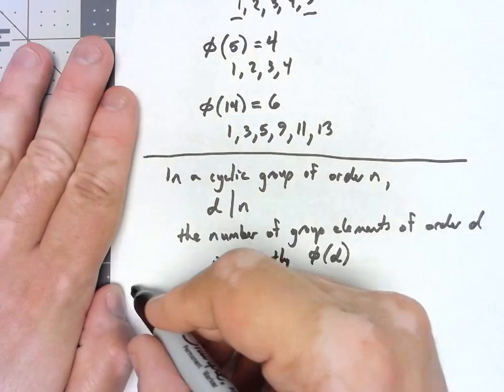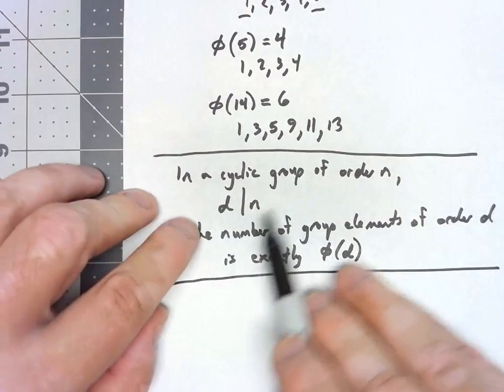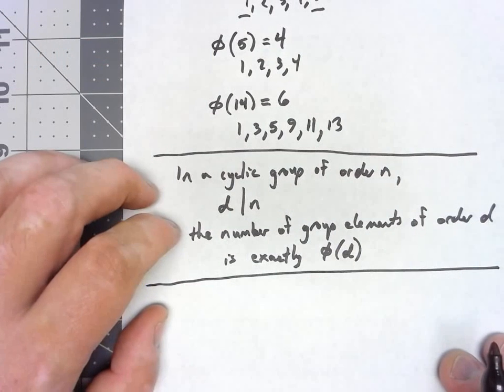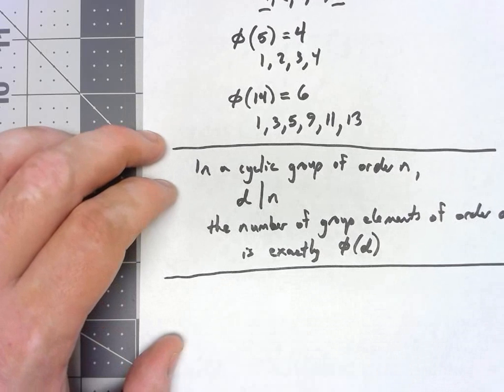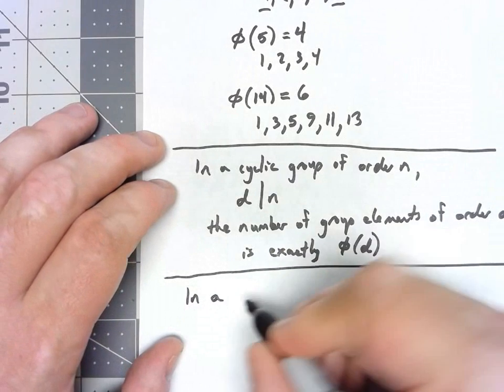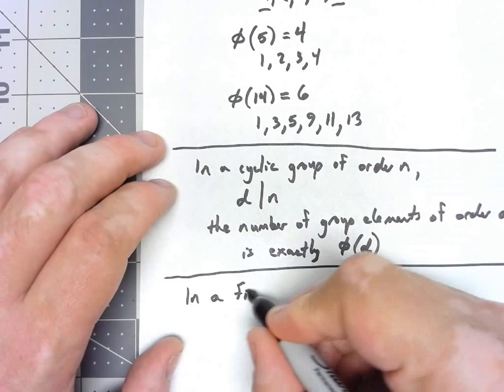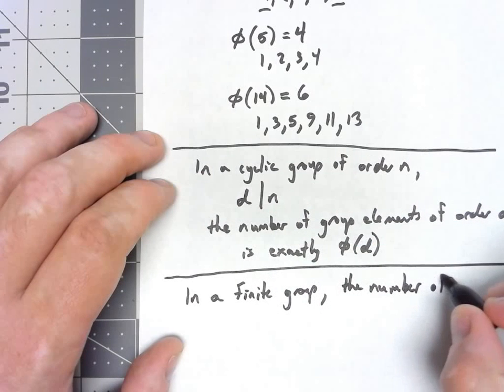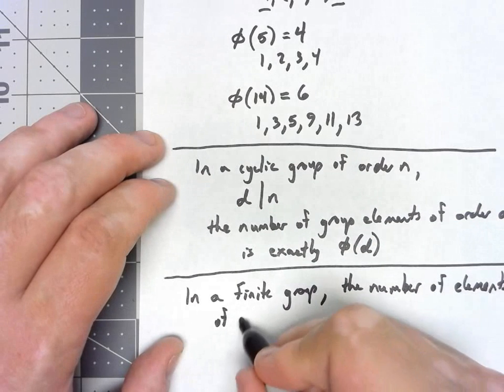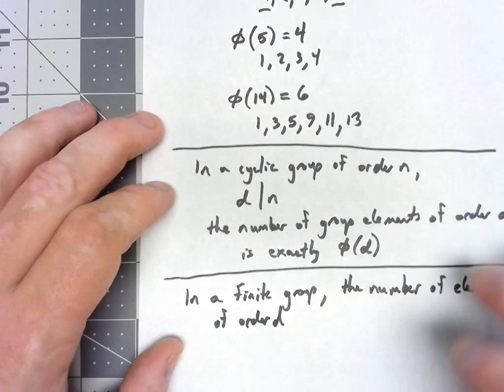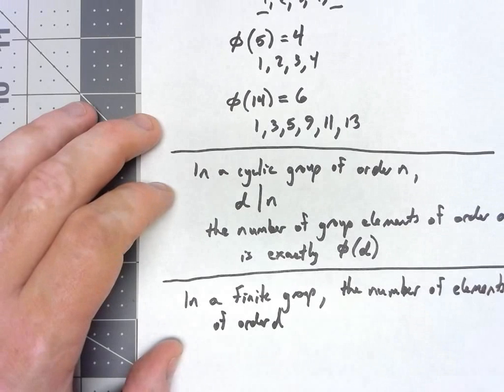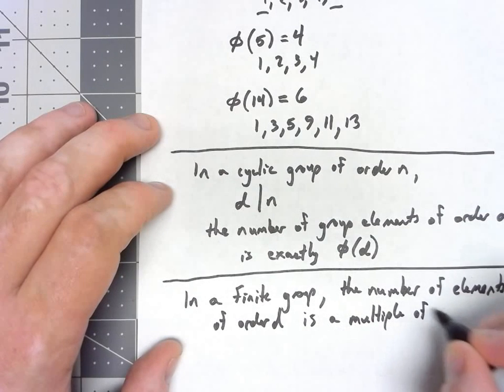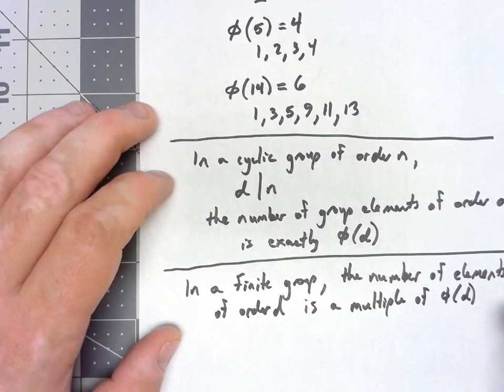Now we actually can go a step further. For this to work and be exactly equal to φ(d), d had to divide n. What if we don't have a divisor? Well, we can actually go ahead and take this a step farther and say, first of all, it doesn't have to be a cyclic group, it just has to be a finite group. The number of elements of order d doesn't have to be exactly equal to φ(d). However, it has to be a multiple of φ(d).